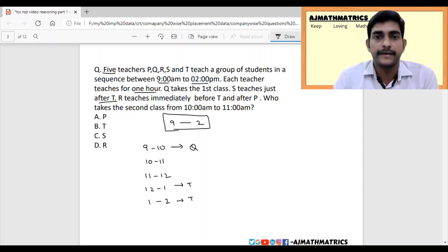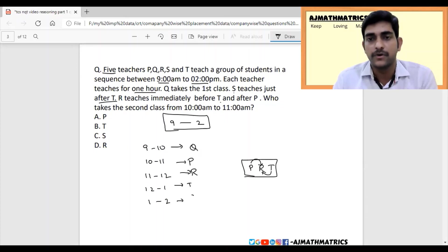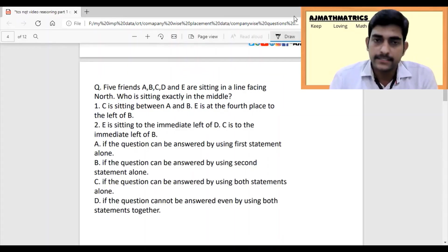R teaches immediately before T and after P, which means the arrangement is P, R, T. So obviously the next place goes to S. The question is who takes the second class from 10 to 11 am? That is P. So the answer is P.